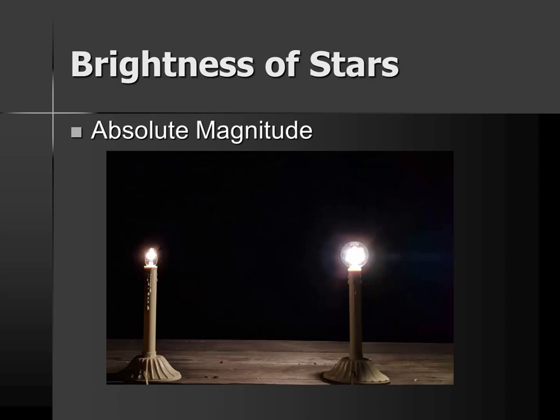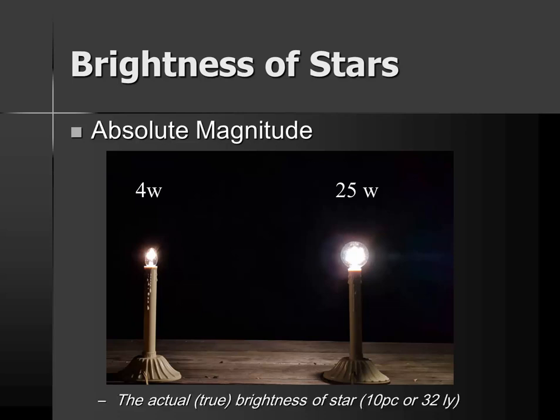Absolute magnitude is the actual brightness of the star. We can see here the light on the right is a 25-watt light bulb, which gives off far more light than the 4-watt. In the previous image, the 25-watt light bulb was just much further away. With stars, we talk about the actual or true brightness with absolute magnitude — that's as if the star was 10 parsecs, or 32 light years, away.